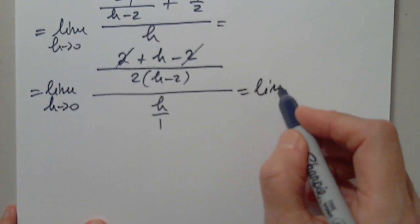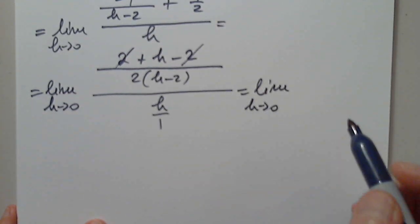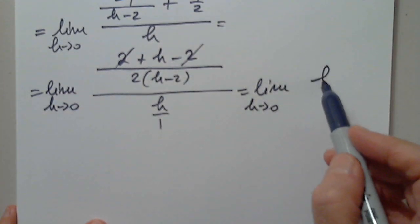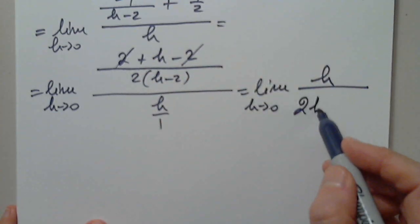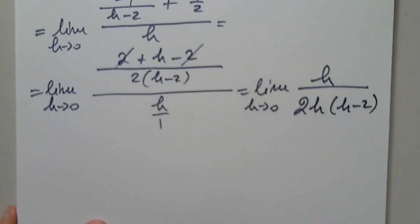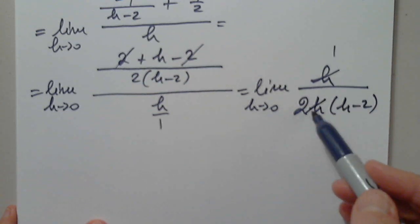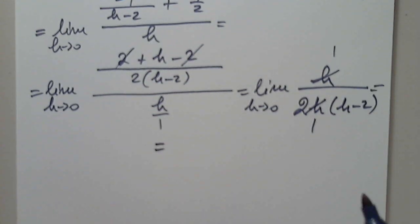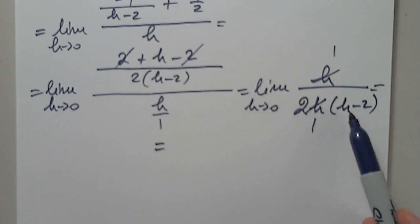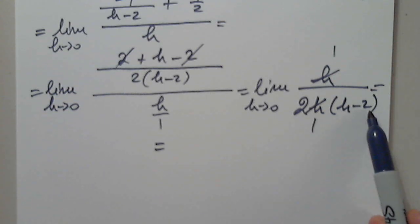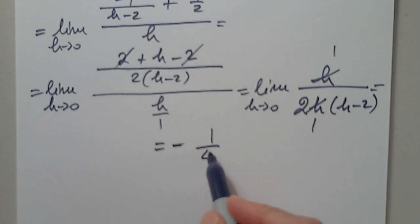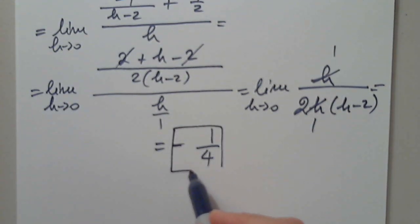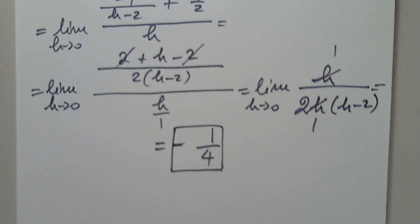We see that h approaches 0. So we have h in the numerator over 2. I have to flip — 2h, h minus 2. So I simplify. When h approaches 0, 0 minus 2 is negative 2. 2 times negative 2 is negative 4. The numerator goes to 1 and the denominator goes to negative 4. And that's it.